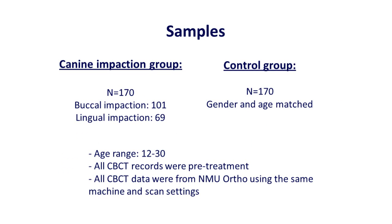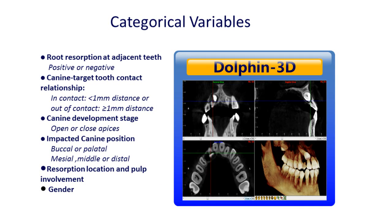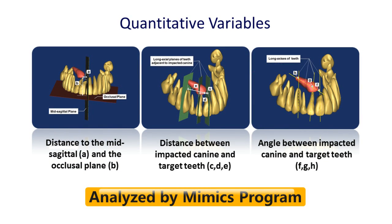Following established inclusion and exclusion criteria, patients' pre-treatment CBCT data were obtained. One hundred and seventy patients were included in the impaction and age-gender matched control groups, with all CBCT scans obtained from the same machine and settings. A number of categorical variables, as detailed in this slide, were analyzed by one investigator using the Dolphin 3D software. Similarly, a number of quantitative variables about the linear and angular measurements of the impacted canine were analyzed using the MIMICS program.